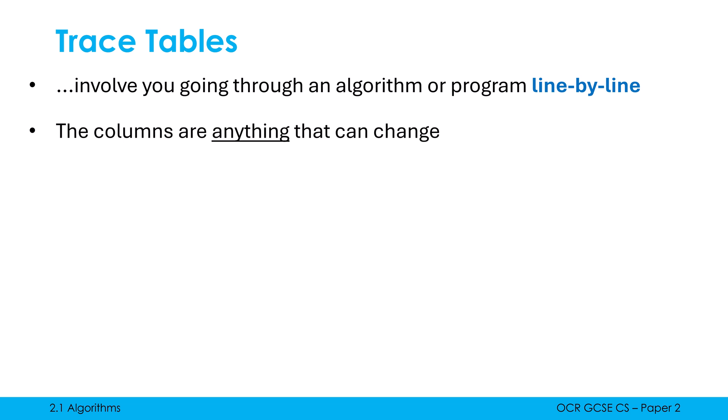The columns can really be anything that can change in a program, so don't get too thrown by what you're given. Normally it will give you an empty table with the columns already labelled — you just have to use what's given to complete it. Typically there'll be variables, items in an array, a for loop counter, an output column, or a line number column. We write down a value whenever it changes in our program — if things stay the same, it's not worth keeping track of.